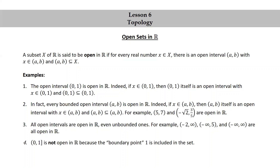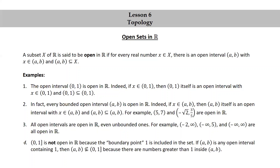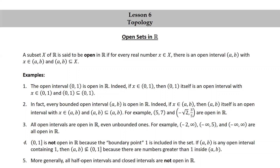The half-open interval (0, 1] that includes 1 is not open in R, because the boundary point 1 is included in the set. If (a, b) is any open interval containing 1, then (a, b) is not a subset of the half-open interval (0, 1], because there are numbers greater than 1 inside the open interval (a, b). More generally, all half-open intervals and closed intervals are not open in R.